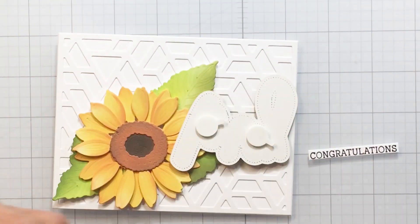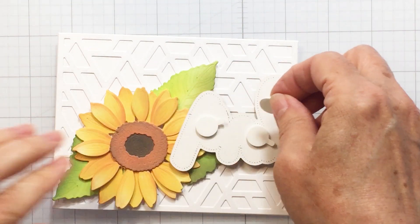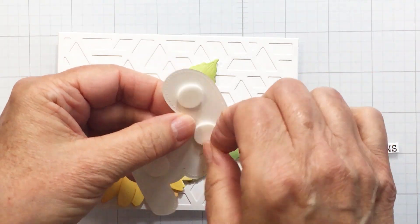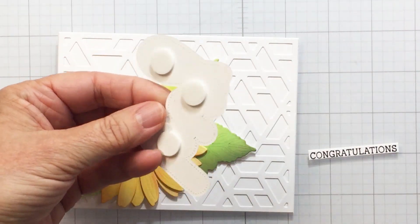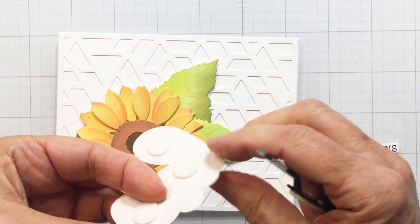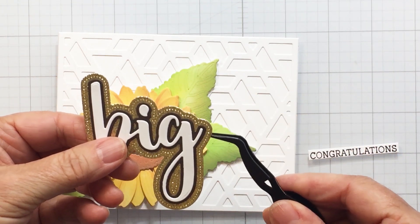I'll add some foam dots here to the back of my buzzword 'big.' These foam dots with the tabs are amazing and they are available in the Honey Bee shop, so make sure you check those out. I'm just going to use my tweezers to help me place this onto my card.